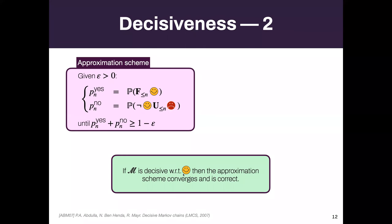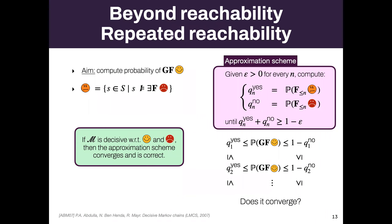That result is due to these authors. They also studied not only reachability properties but also repeated reachability. They have another approximation scheme — finite horizon properties — and under some decisiveness assumption, they show this scheme converges and is correct with respect to repeated reachability: you want to reach the good target infinitely often.